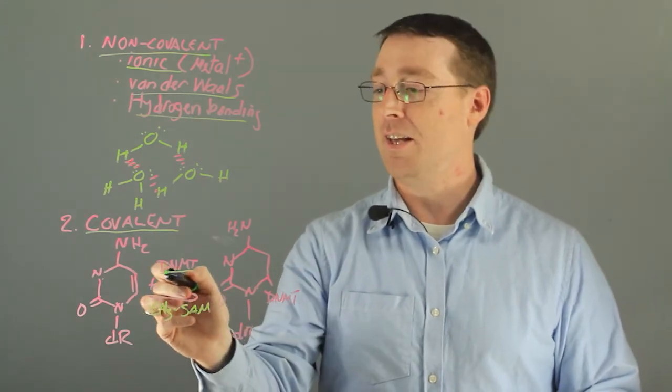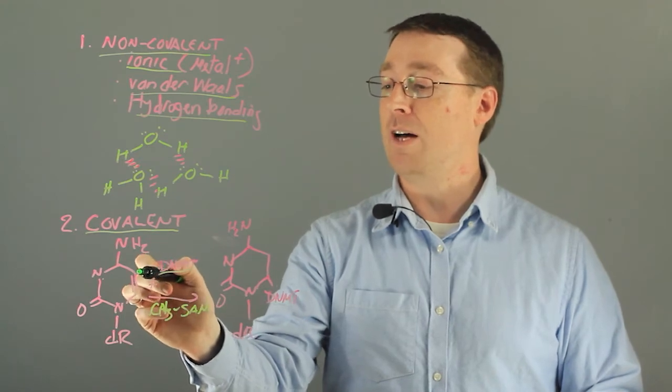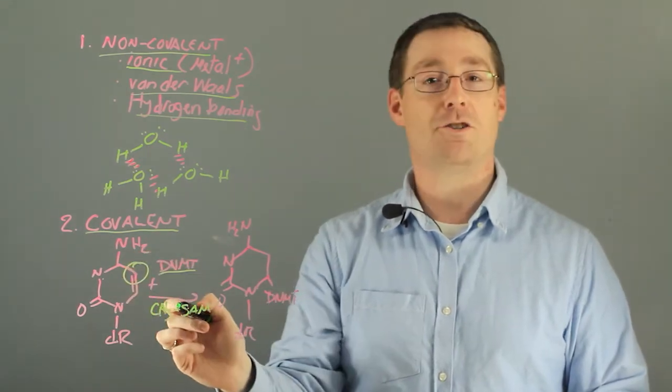These are DNA methyltransferases and they catalyze the addition of a methyl group onto the C5 position of carbon shown here. So how does this happen?